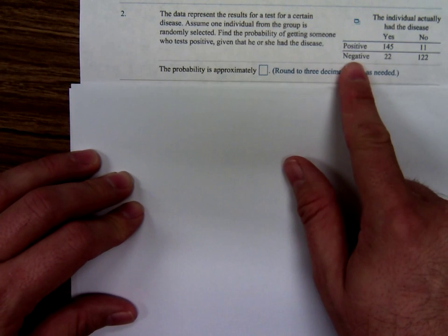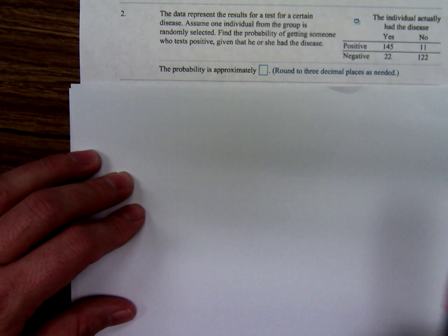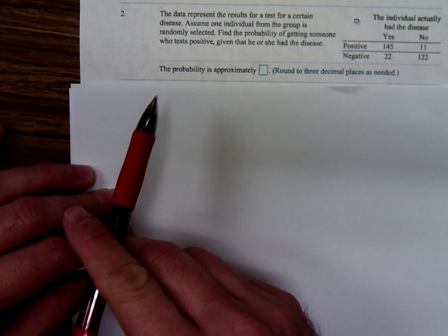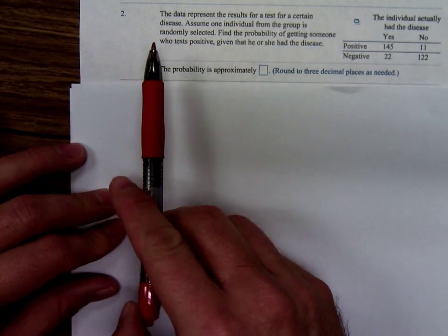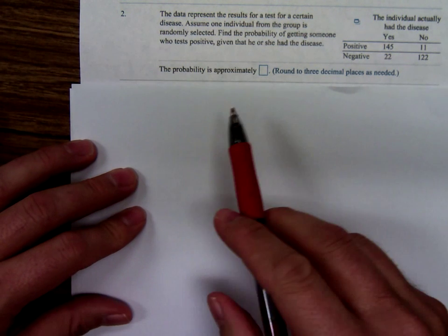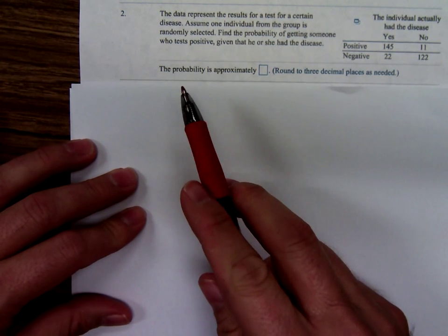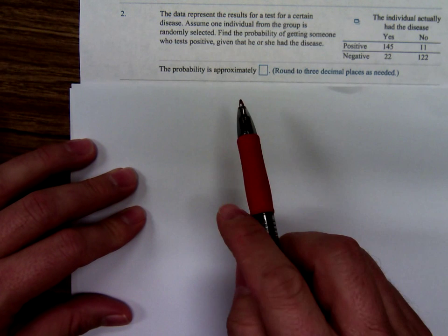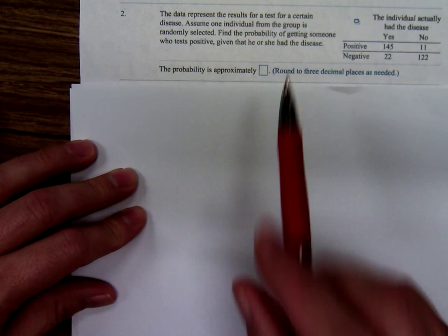We're asked to find, assume one individual from the group is selected at random, find the probability of getting someone who tests positive given that he or she had the disease.